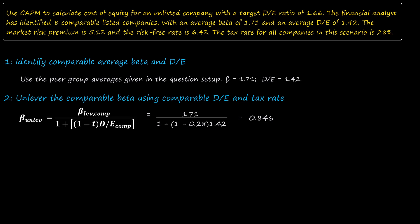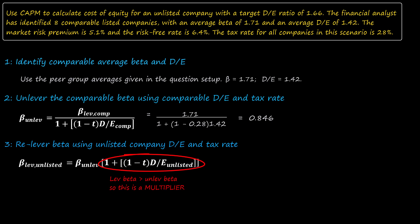In the third step, we use the unlevered beta for the comparable group as an estimate of the unlevered beta for the unlisted company. We then need to re-lever that estimate using the second Hamada equation. Because levered beta is greater than unlevered beta, we know that this time the financial leverage factor is a multiplier, not a divisor. We are also careful to ensure that we use the D/E of the unlisted company to calculate that levered beta for that unlisted company is 1.856.